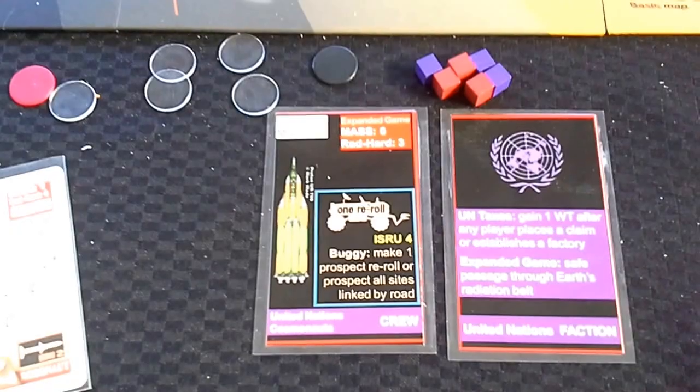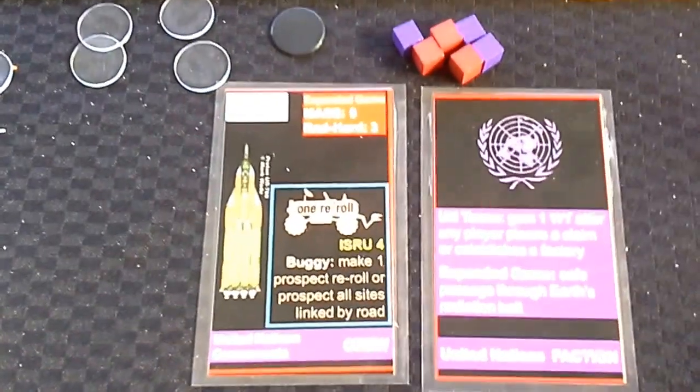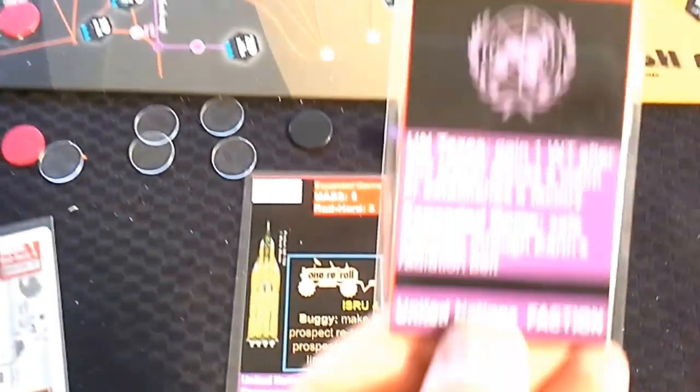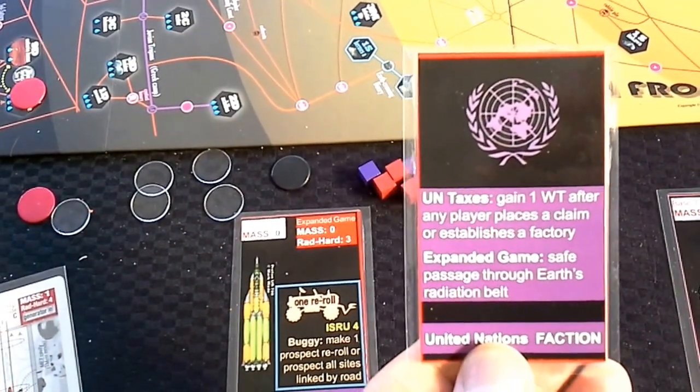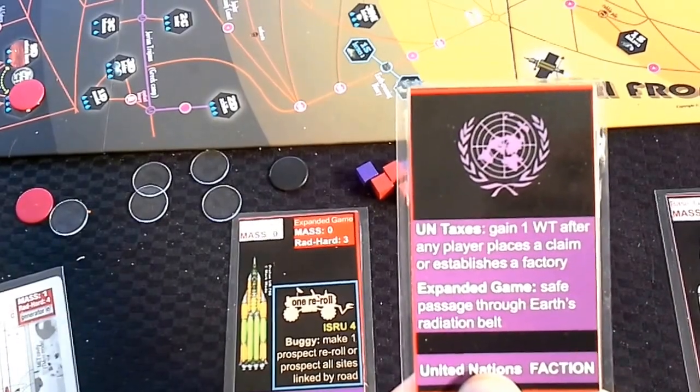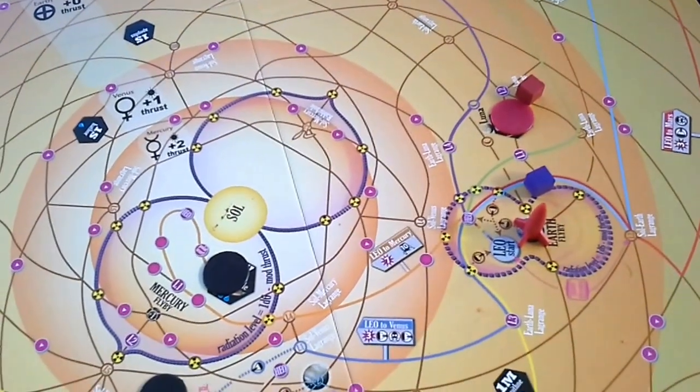I was playing the United Nations with their ability to gain one water tank after any player places a claim or establishes a factory. And I had safe passage through Earth's radiation belt, which is, I think, a very powerful faction ability.